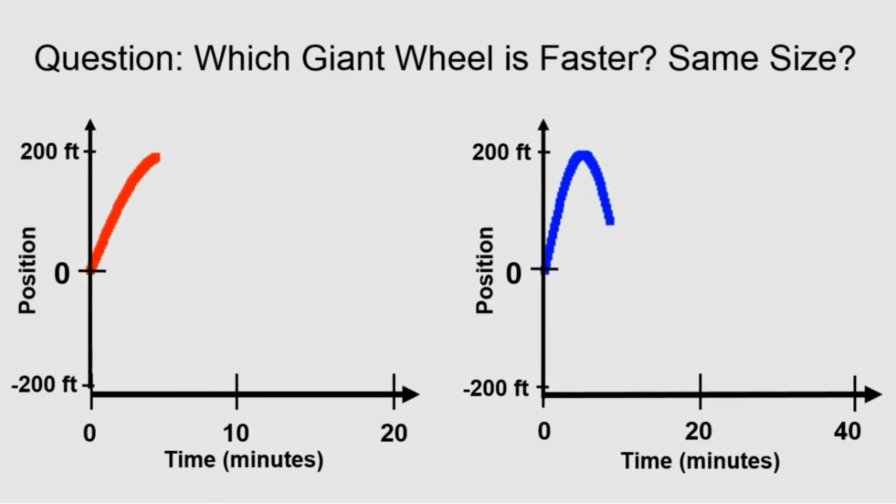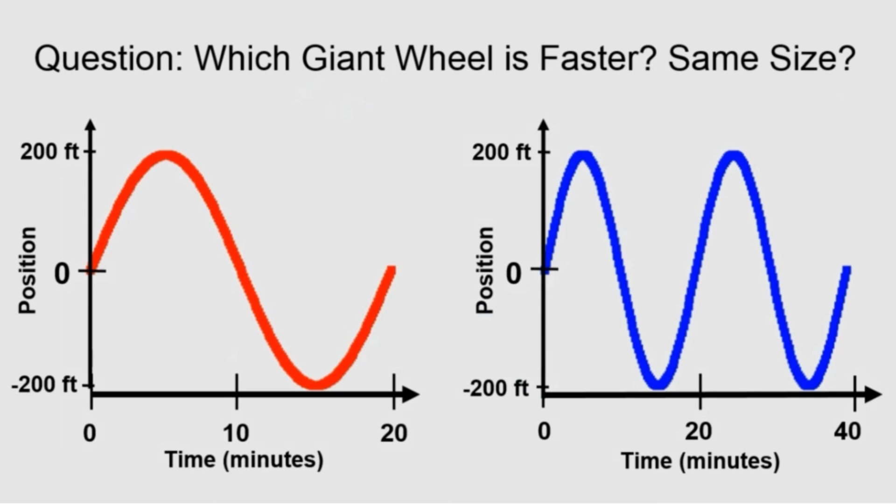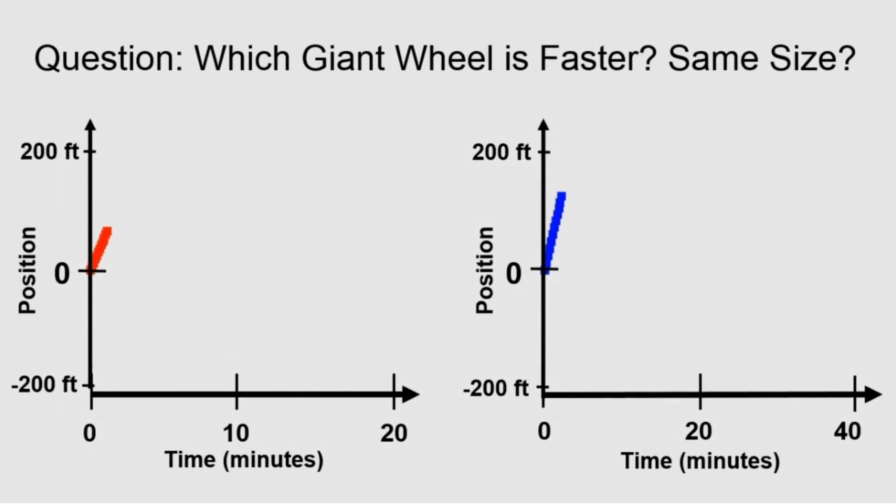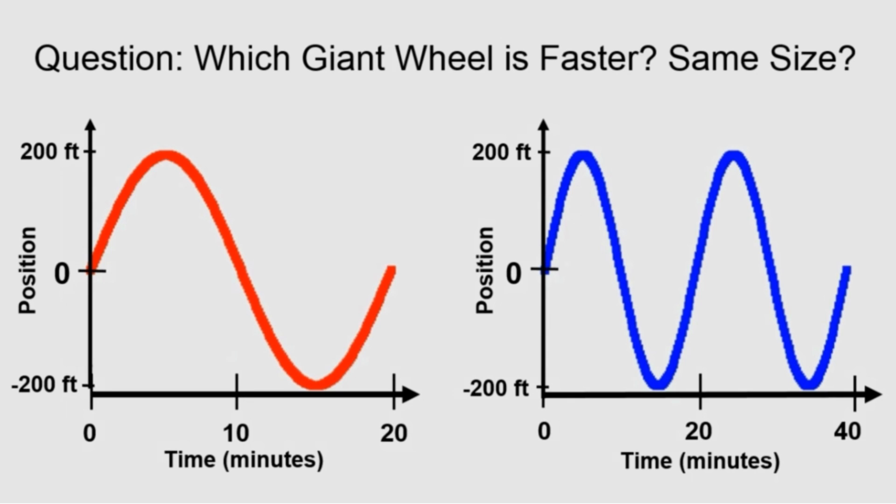Here's a question to check your understanding. Which giant wheel here is rotating faster, the red or the blue one? Are they the same size? Comment below for your answer. Here's a hint. You may pause and carefully look at both axes, position and time. The answer is in the description.